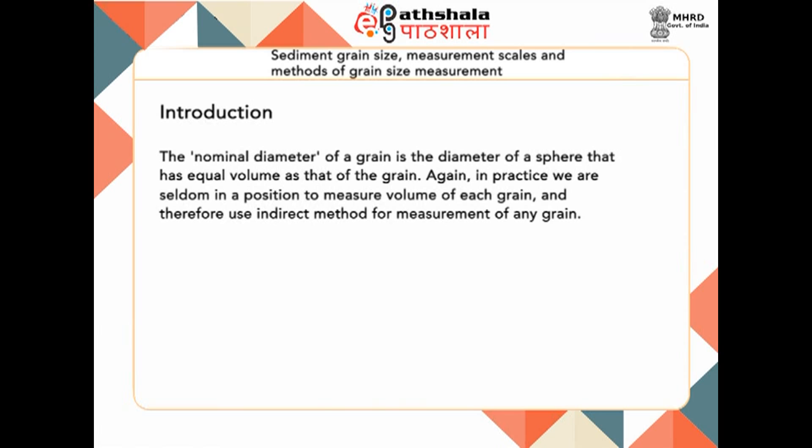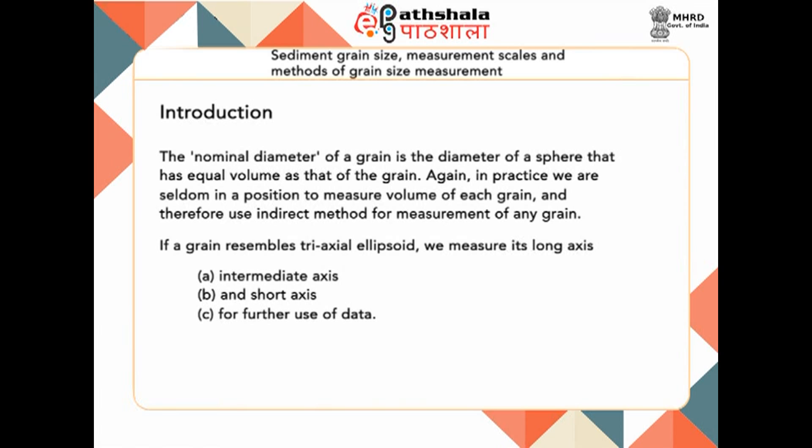To resolve this question, the concept of nominal diameter is proposed. The nominal diameter of a grain is the diameter of a sphere that has equal volume as that of the grain. In practice, we are seldom in a position to measure the volume of each grain of a rock, and therefore use an indirect method. If a grain resembles a tri-axial ellipsoid, we measure its long axis A, intermediate axis B, and short axis C for further use of data. In nature, grain size of sediments varies widely — from clay size, less than 0.002 mm, to boulder size, more than 25 cm in diameter. The necessity was always felt to categorize grains in terms of their size scale.